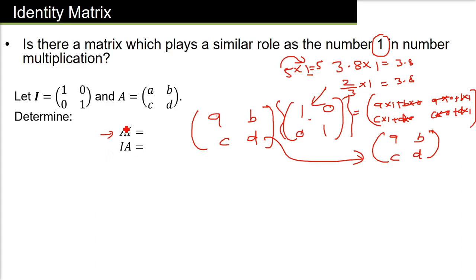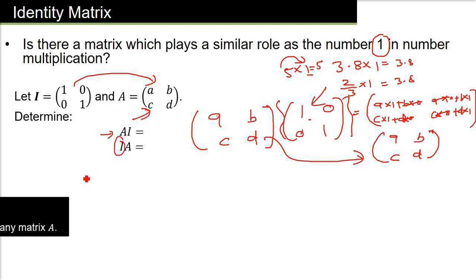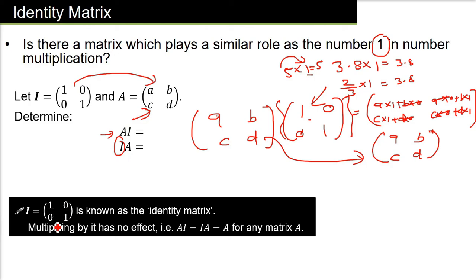Even if you do I into A, that same matrix will come. So I am saying, I is the identity matrix for A. So this is the identity matrix, and its multiplication of this matrix with any matrix, 2 by 2 matrix in this case, will not have an effect.